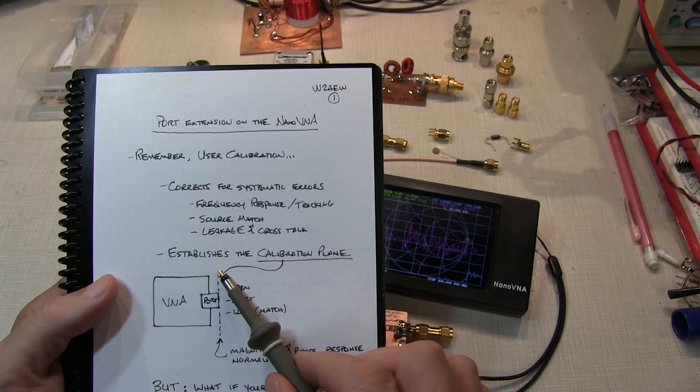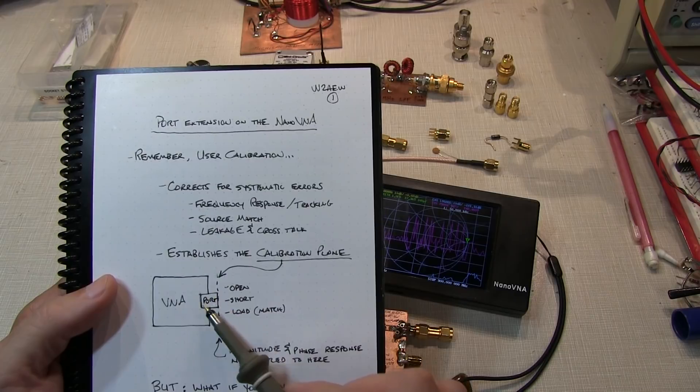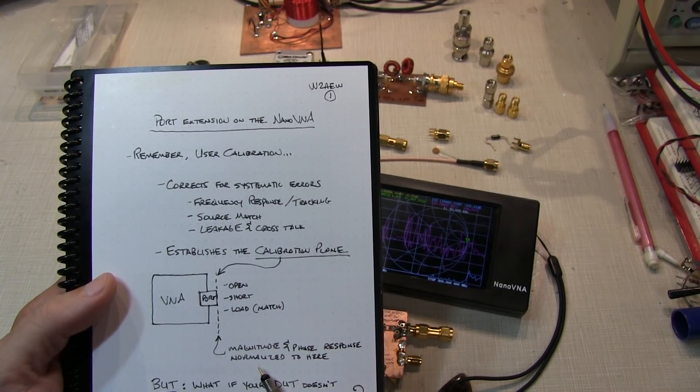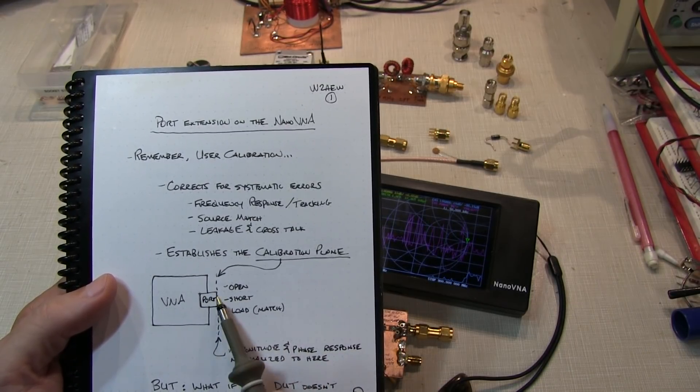And this is essentially the plane where you attach your open, short, and load when doing, in this case, a single port calibration. And what that does is it makes sure that the magnitude and phase of the response is normalized to that point so that we're only measuring the effect of magnitude and phase of the device connected at this location.